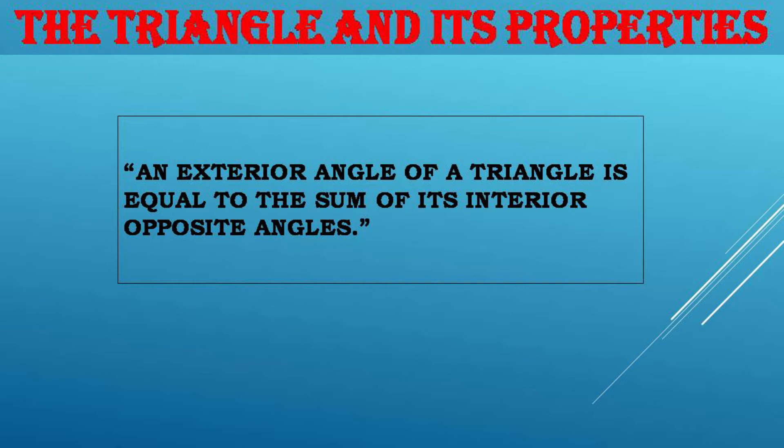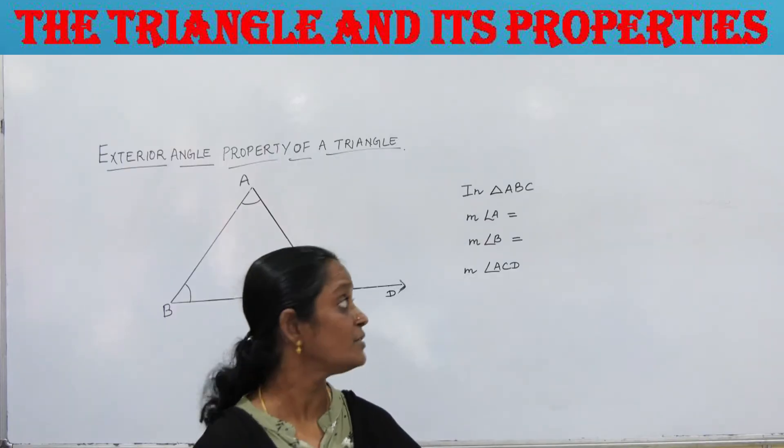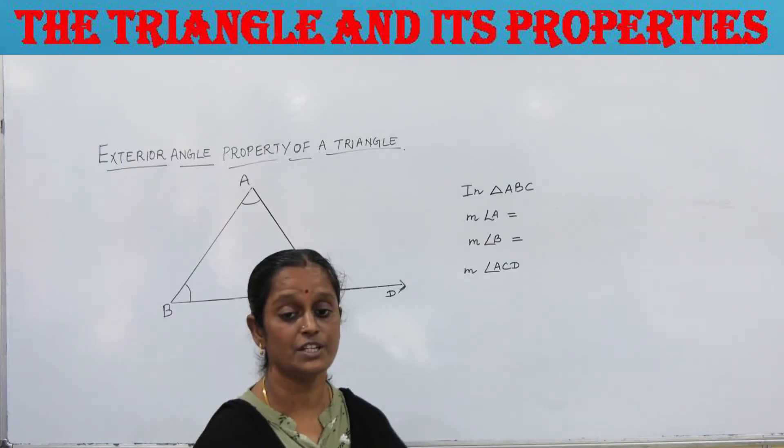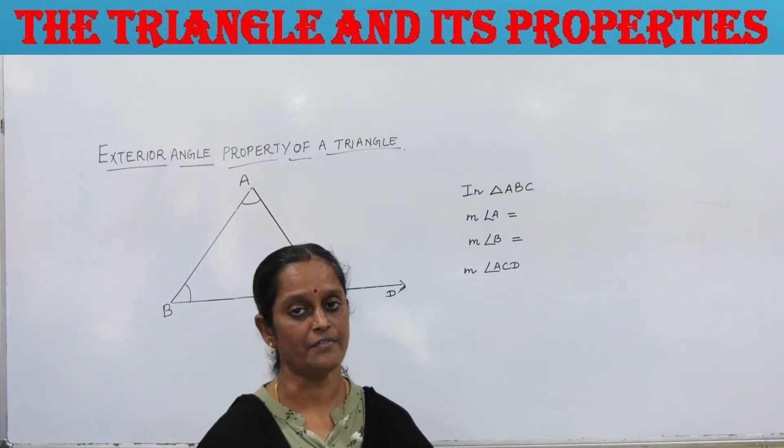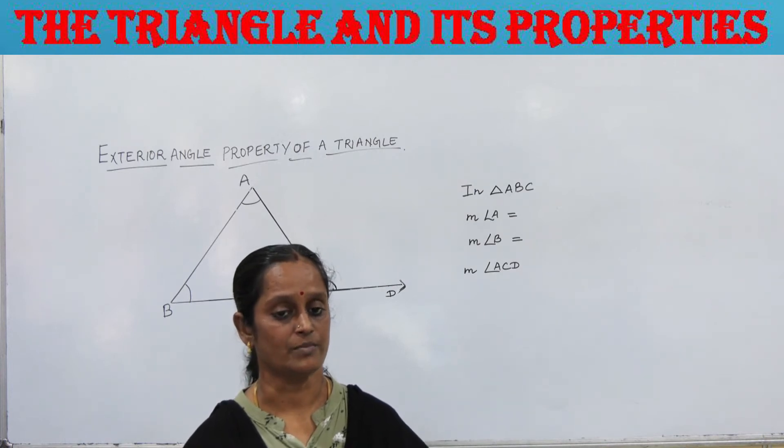We can conclude that an exterior angle of a triangle is equal to the sum of its interior opposite angles. This property is known as the exterior angle property of a triangle. Next, we will do another activity to verify the exterior angle theorem.